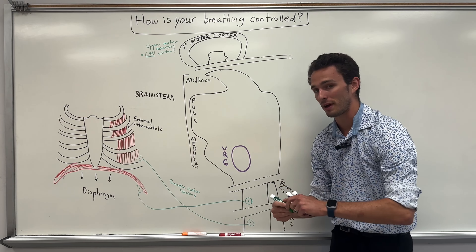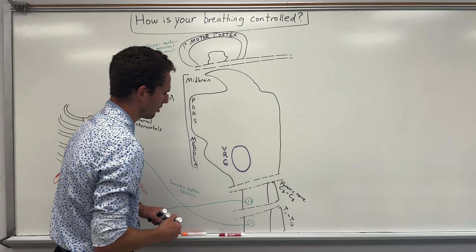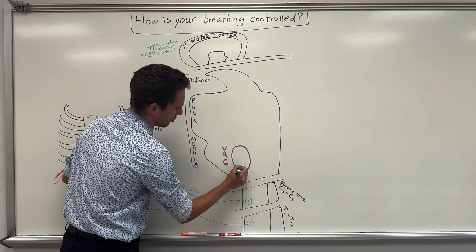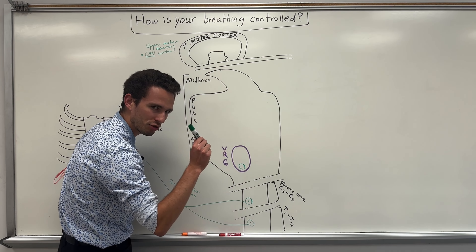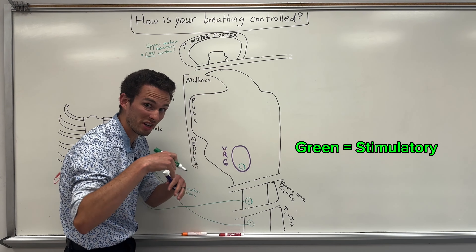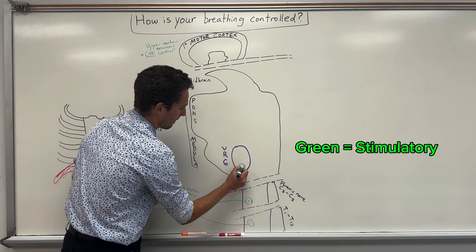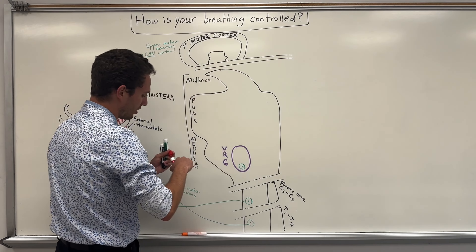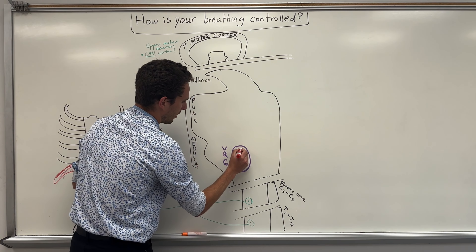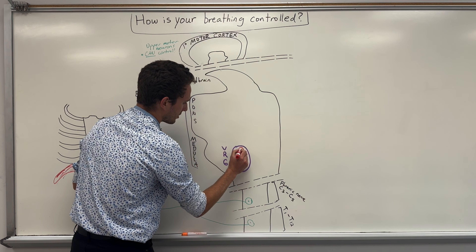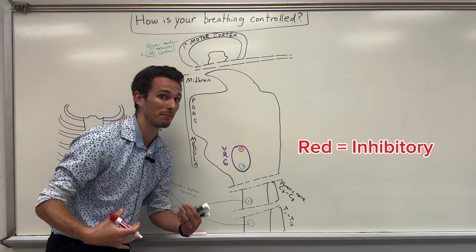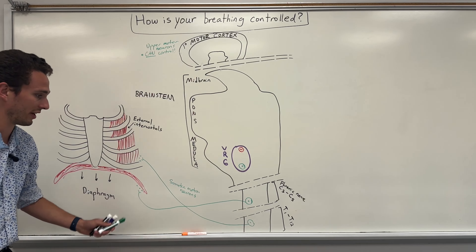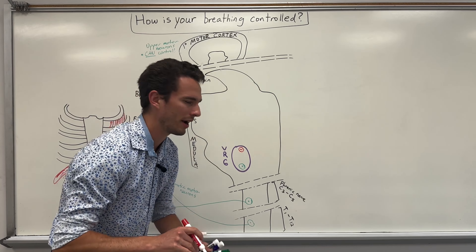In the ventral respiratory group, I'm going to draw a couple of different neurons. A cluster on the bottom in green — and any time I draw in green, know that those neurons are going to be stimulatory. But I'm also going to draw things in red up here, and those are going to be inhibitory, marked with a minus sign. So for the rest of this video: green means stimulate, red means inhibit.